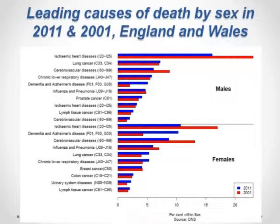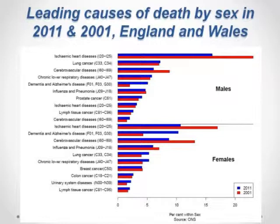The main cause of death for both men and women in Britain is ischaemic heart disease, although there's been a very substantial reduction for both over even just 10 years. For men, lung cancer remains the second main cause of death, followed by strokes. For women, what's particularly notable is the very rapid increase in the last 10 years in deaths due to dementia and Alzheimer's disease, which is now for women the second main cause of death.